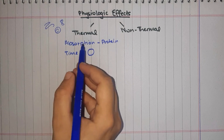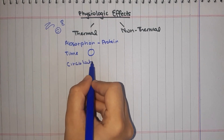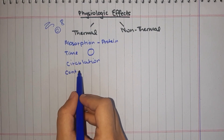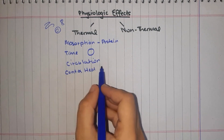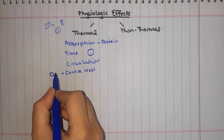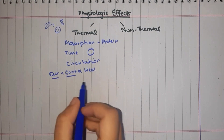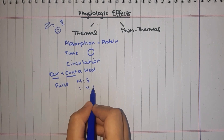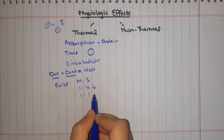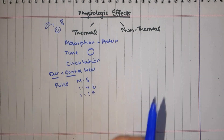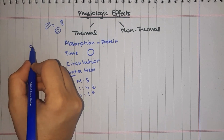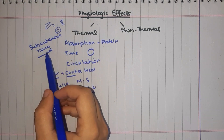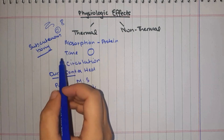The thermal effects improve circulation. In continuous mode, heat is directly related to intensity and duration — the greater the duration, the greater the thermal effect. However, if the beam is too intense and duration too long, excessive heating can occur, especially over bone prominences. To avoid periosteal pain, we should avoid applying the ultrasound directly over bone prominences with excessive intensity.